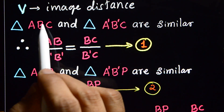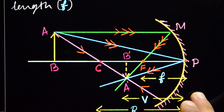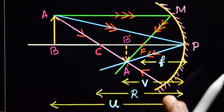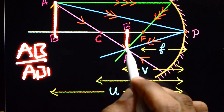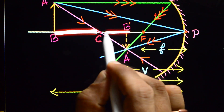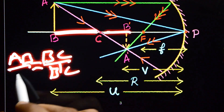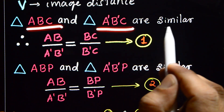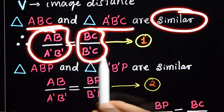After this, you have to compare the similar triangles. Here, triangle ABC and triangle A dash B dash C are similar triangles. From the similarity, AB divided by A dash B dash is equals to BC divided by B dash C. That is our first equation.